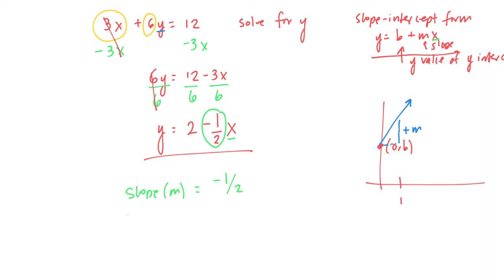And then the y-intercept, that's the other number, that's the number that doesn't have an x with it. This is going to be the output when the input is equal to 0. So when the input is equal to 0, the output is 2.